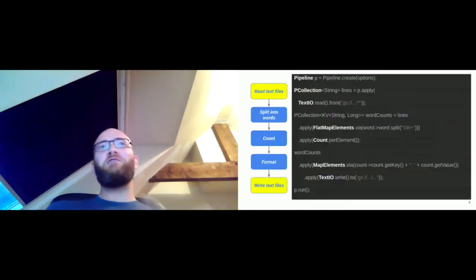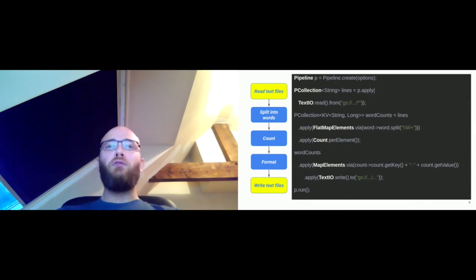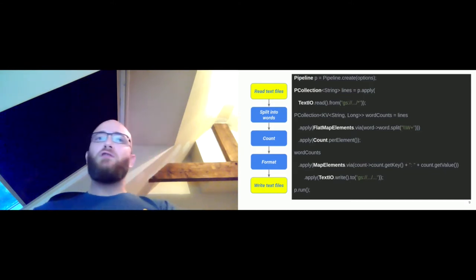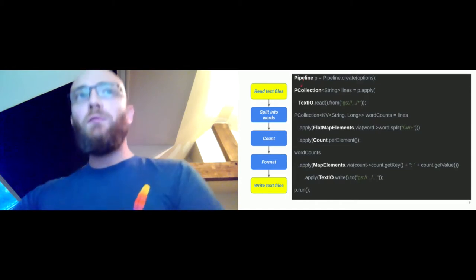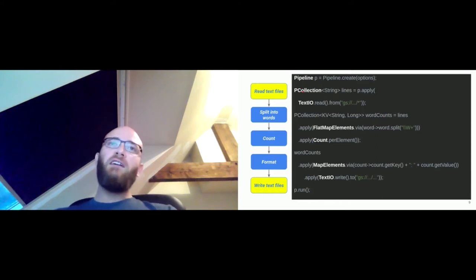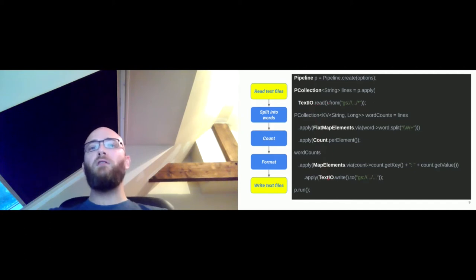Here is a traditional simple pipeline that reads a text file, counts occurrences of words, and prints the output to a text file — just to show the Beam API. We have the pipeline object as the user's interaction handle, the PCollection as an abstraction of data spread across the cluster, and several transforms: flat map, count, map elements, and TextIO for reading from and writing to text files.